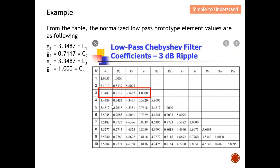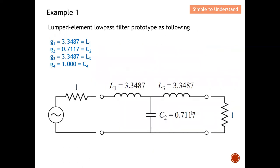Once all g-values are found, I write them onto the lumped element diagram. So g1 = 3.3487, g2 = 0.7117, g3 = 3.3487, with a load value of 1. Now I have all lumped element component values and need to convert them into microstrip line.